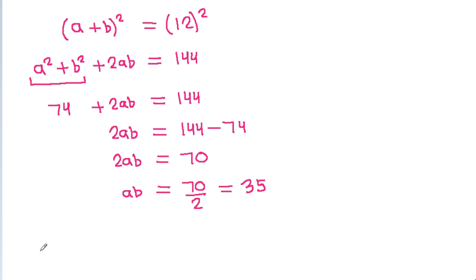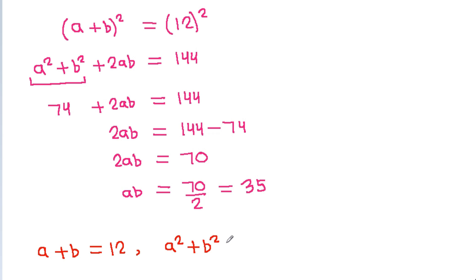So now we have: a minus b is 12, a squared minus b squared is 74, and ab is 35.